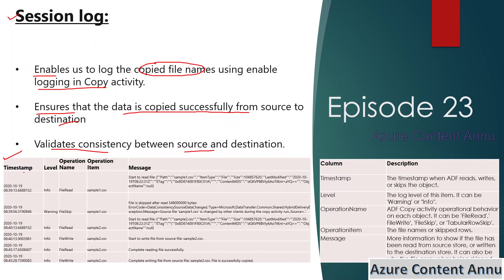This is how the output of the session logging file will look. It captures the timestamp at which any operation is started or finished. It also captures the logging label — we have two kinds of logging labels: info and warning. Then we have the operation name, which means what operation has been performed on the file — whether the file is getting read, skipped, or written to the sink.